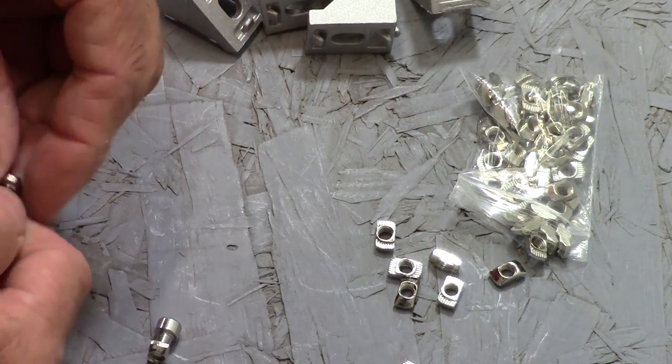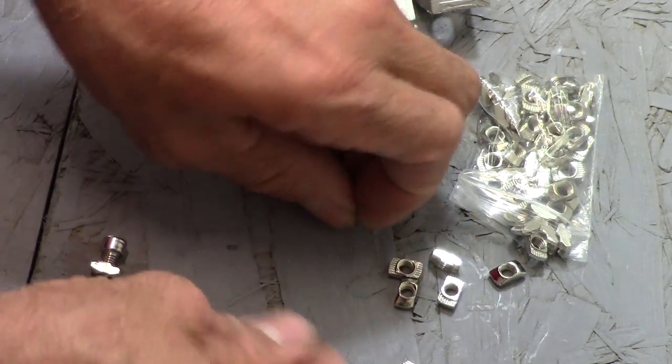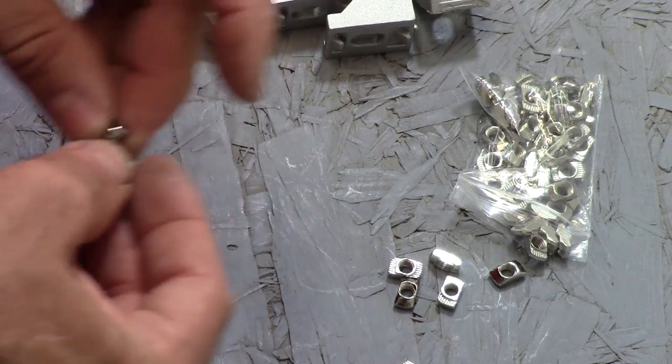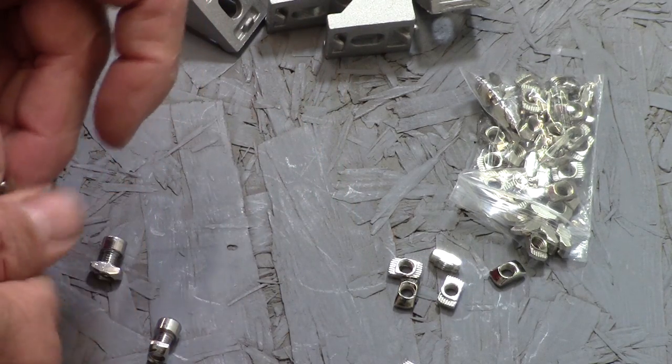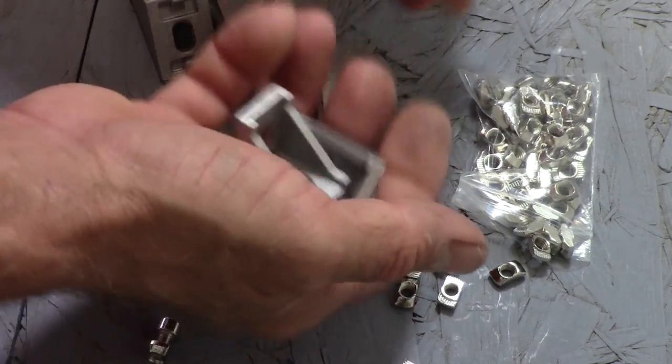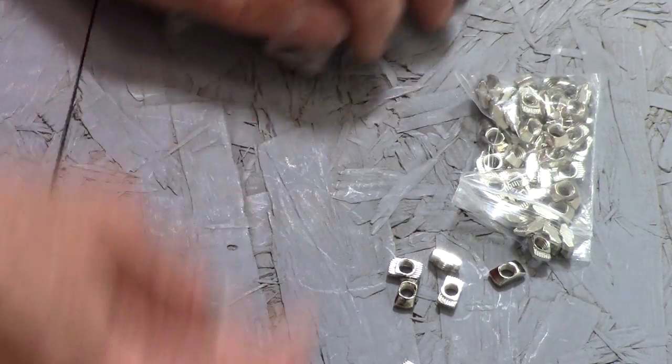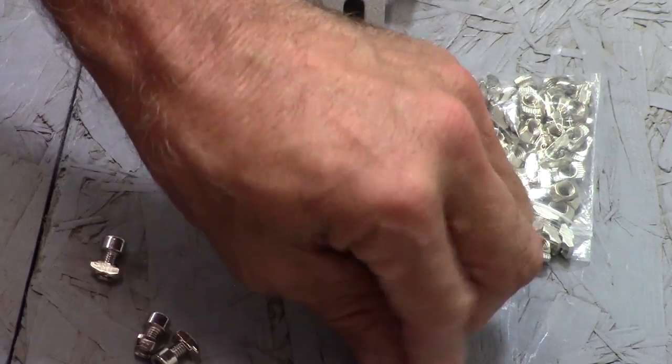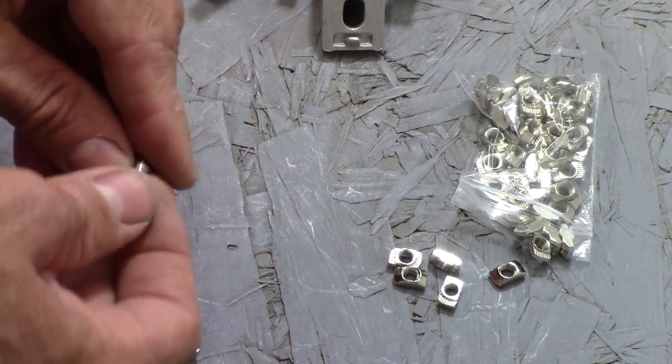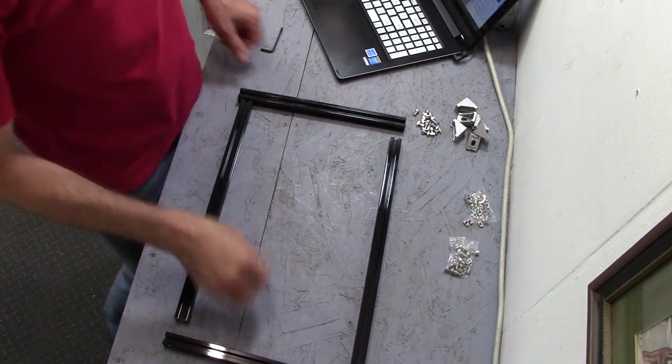So all I'm going to do is just get some bolts started in some nuts. Let's say we've got one, two, three, four, five, six of them times two. So I've got to put together 12 nuts and bolts.